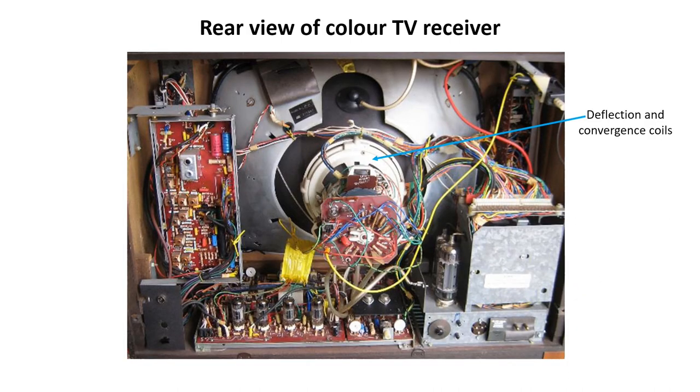This picture shows the rear view of a Pye color TV receiver. A variety of coils are mounted around the tube neck as shown. Some are used to deflect the beams to scan the raster as explained in the previous video and some are used to ensure that the three electron beams all converge onto the same hole in the shadow mask as the beams scan across the screen.